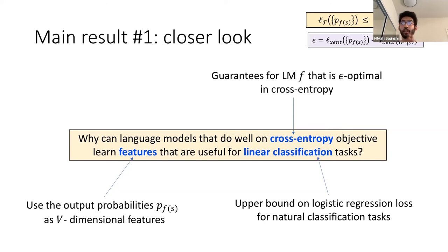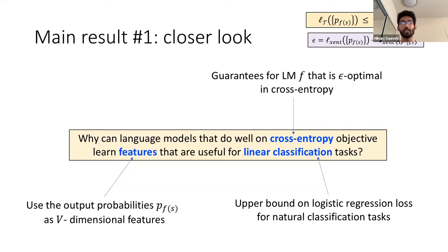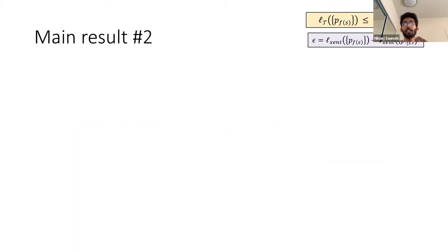The suboptimality ε is defined as the cross-entropy loss for the language model minus the cross-entropy loss for the true distribution P* — the best cross-entropy you could have gotten if you knew the true distribution. If you're familiar with perplexity, you can think of ε as the log of the ratio of the perplexity of your language model to the best perplexity you can hope to get. So if your language model has perplexity 30 and the true perplexity of natural language is around 20, then ε is something like log(1.5) ≈ 0.6. We use V-dimensional features here — the vocabulary size of 50,000 to 100,000 — which is not desirable in practice. The next result provides a stronger version showing guarantees for certain low-dimensional D-dimensional features.